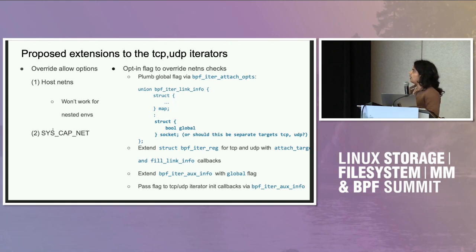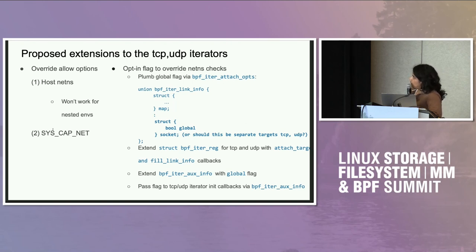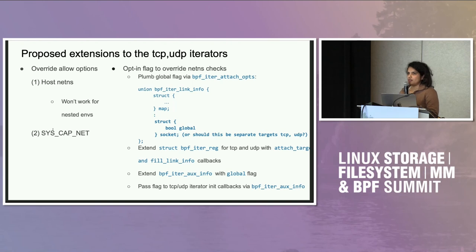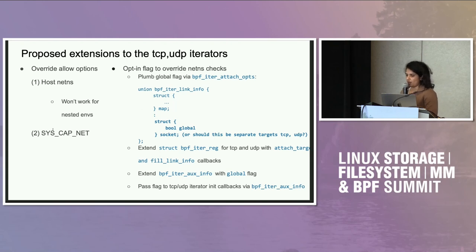To repeat what Joe said: each Kubernetes node is deployed in a separate container. With regard to exposing a flag to users, having a new field in the BPF iterator attach API is a good starting point. Currently, the BPF iterator link infrastructure has parameters for various iterable resources like maps, cgroups, and tasks. We could extend this for socket iterators — either calling it socket, or having a separate target for TCP and UDP.